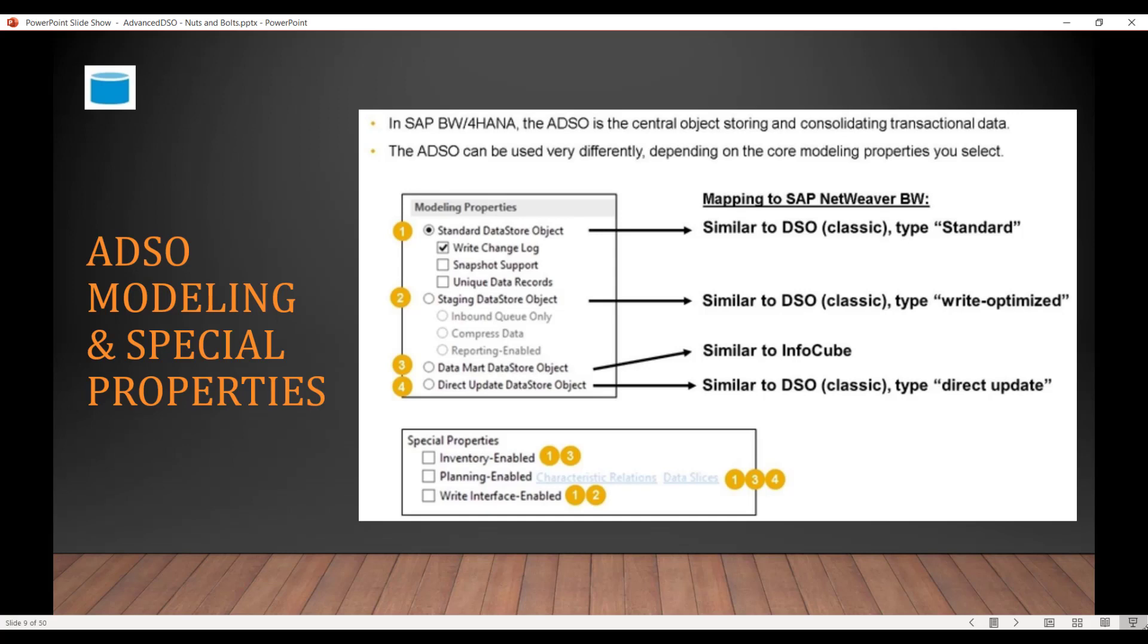In addition to these modeling properties, we have some special properties: Inventory, Planning, and Write Interface Enabled. As you can see, Inventory is only possible for Standard ADSO and DataMart ADSO. Similarly, Planning is possible for Standard ADSO, DataMart ADSO, and Direct Update ADSO. So both Inventory and Planning are not possible for the Staging ADSO.